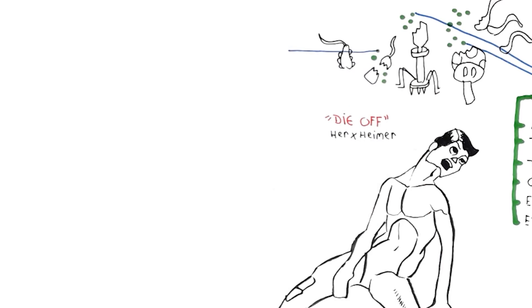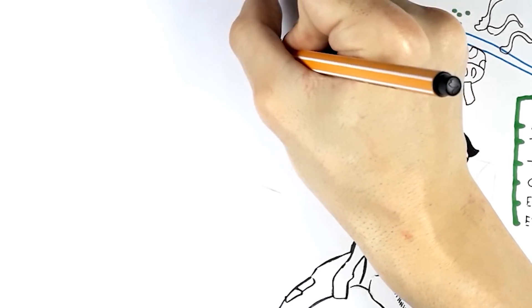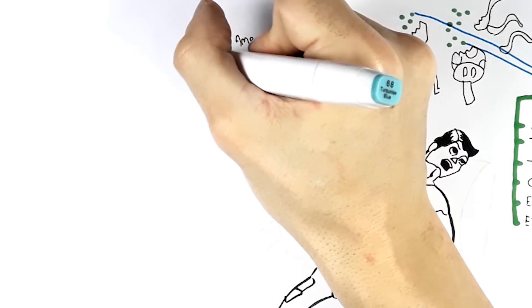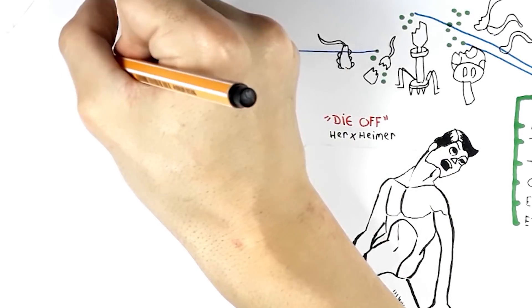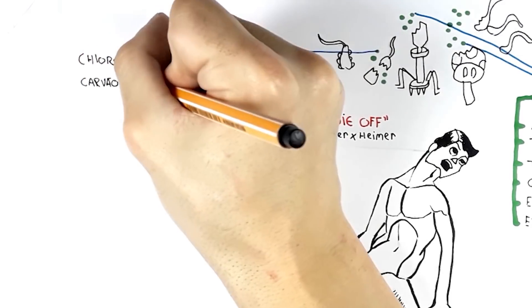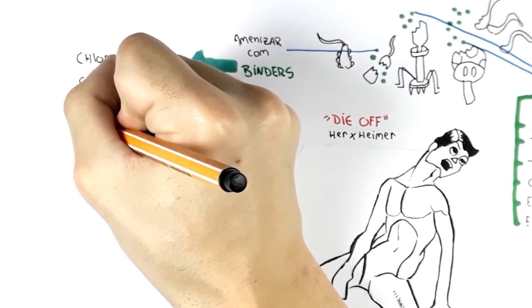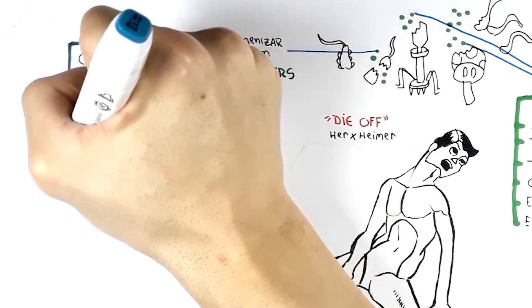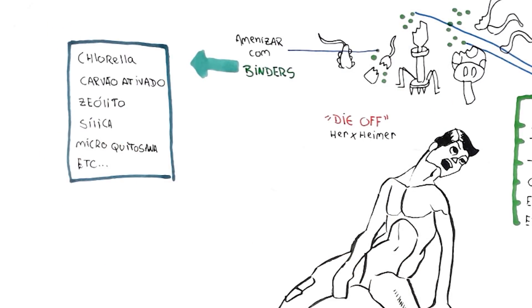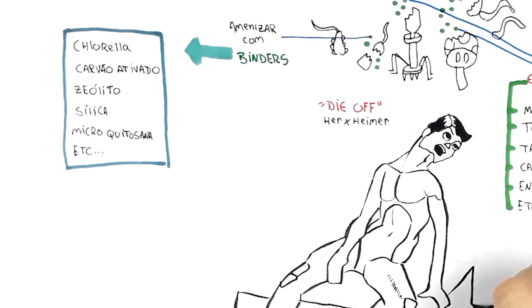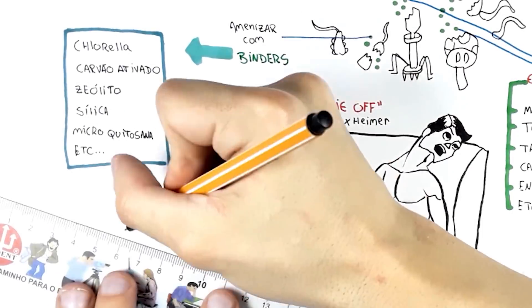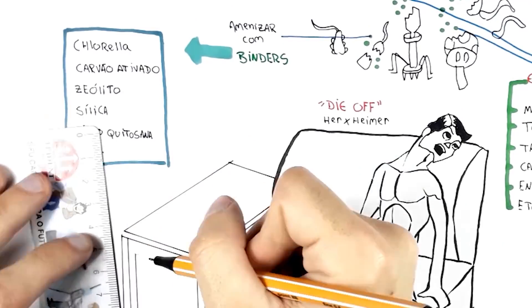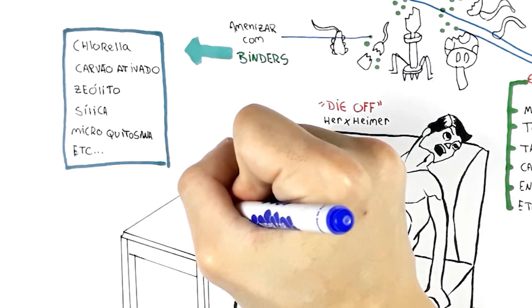However, this can be mitigated with the use of special substances known as binders or chelators. Some of them are chlorella, activated charcoal, zeolite, silica, microchitosan, among others - these are the main ones. They grab the toxins and don't let them fall into your bloodstream, helping in their elimination. Remember that these chelators must be from good sources so as not to be contaminated with heavy metals and other substances.